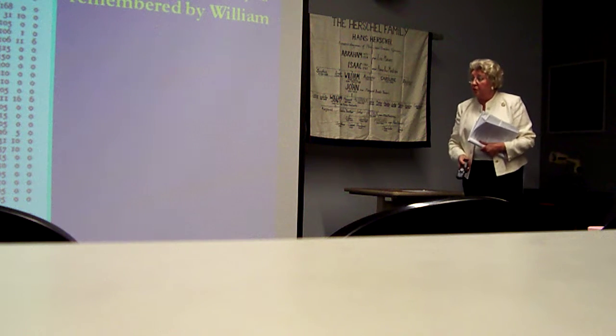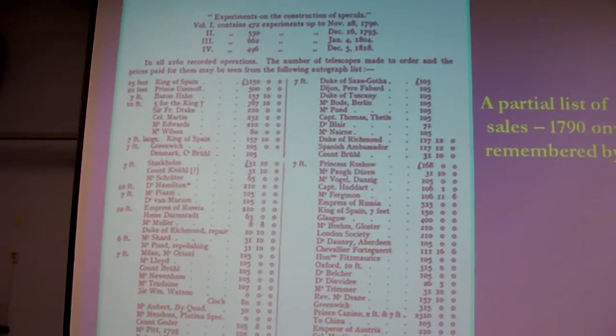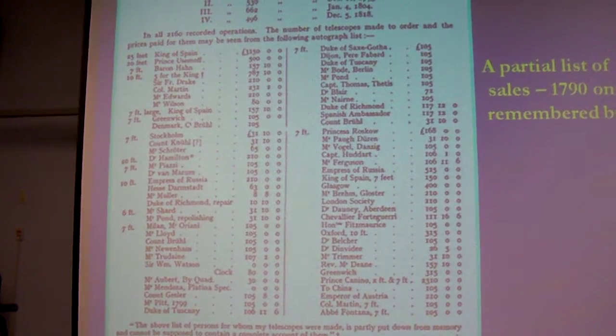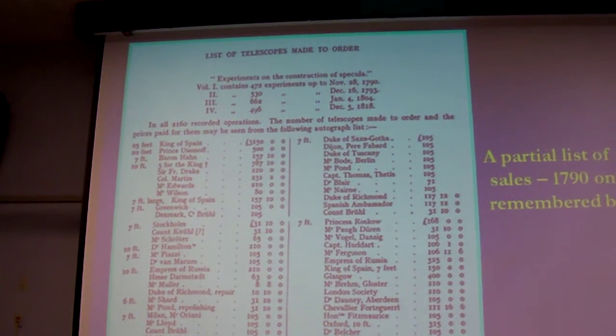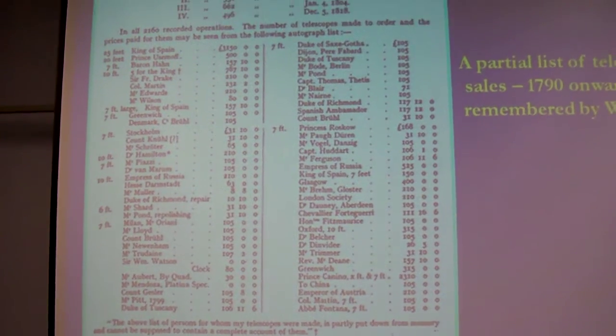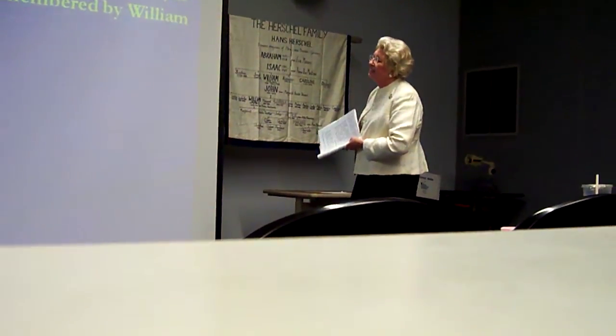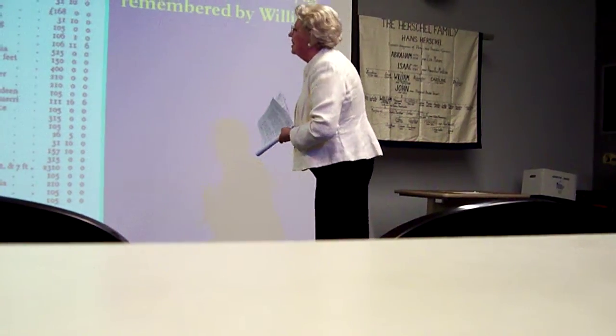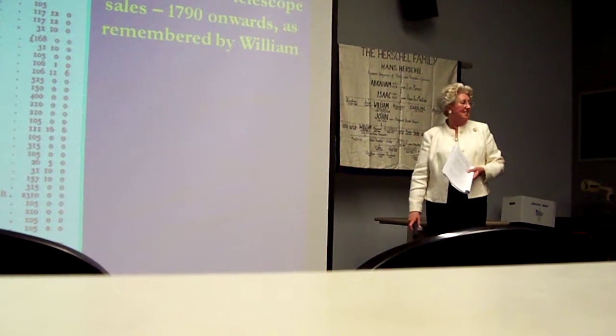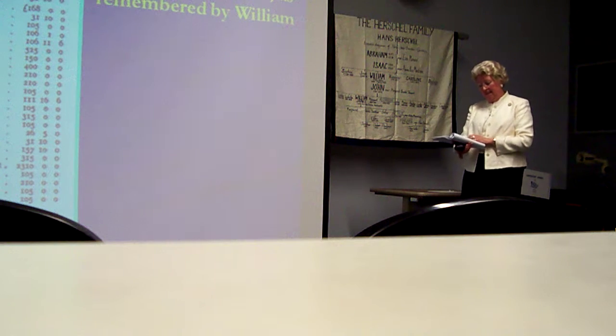Here's a list of some of the people for whom William was making telescopes. You can see the first one went to the King of Spain. He sold it for 3,150 pounds, which is getting on for a million pounds today, so he wasn't doing badly. Sir Francis Drake was on the list as well, fifth one down.